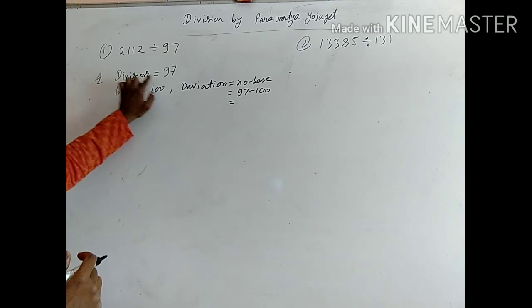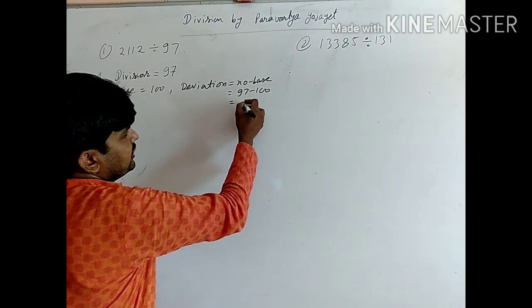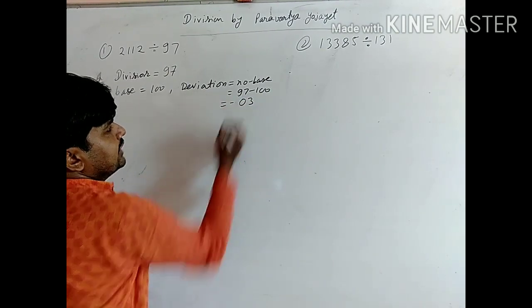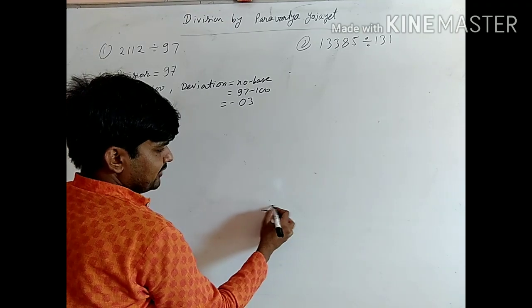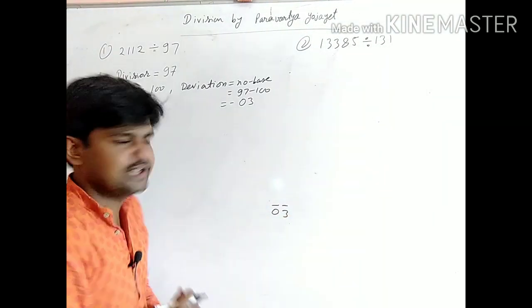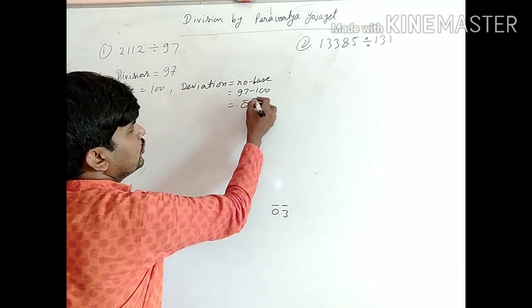Since divisor contains two digits, so deviation also contains two digits. So minus 03 can be written as in Nikhilam method 0 bar of 0 and bar of 3. So minus 03 can be written as 0 and 3 bar.